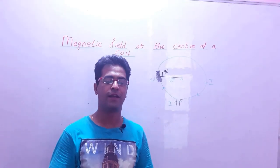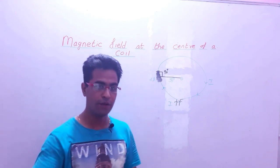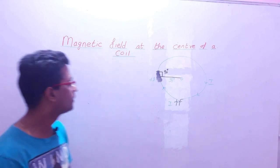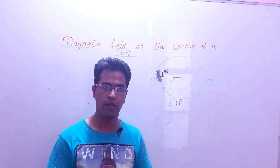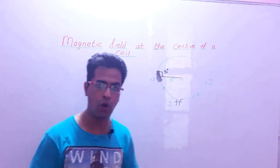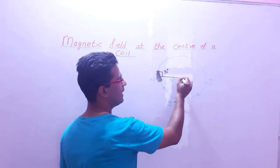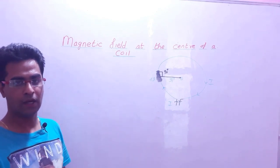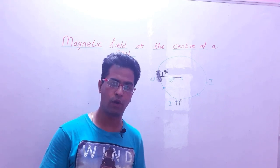Good morning students, my name is Mr. Ravi Sharma and you are watching your own channel Physics For You. Today's topic is magnetic field at the center of a coil due to Biot-Savart Law. हमें एक circular coil के center पे कितना magnetic field होता है वो पता करना है। हम इसके लिए Biot-Savart Law use करेंगे।